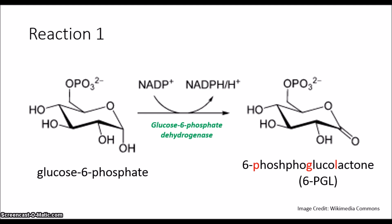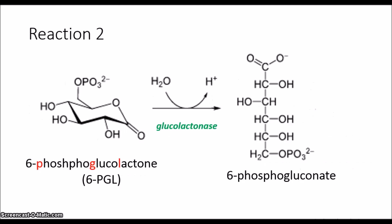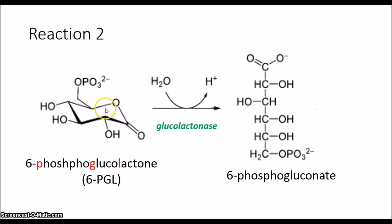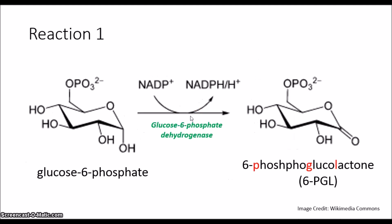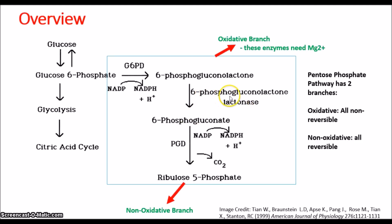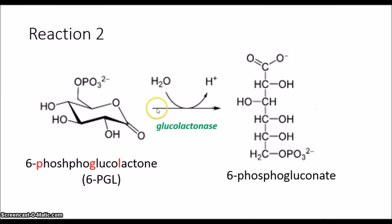Reaction 2: 6-phosphoglycolactone is going to undergo ester hydrolysis at this position with water, and we're going to be creating 6-phosphoglycolate using the enzyme glucolactonase, also known as 6-phosphoglycolactonase. I like to call it by its short name, glucolactonase — it's easier to remember.